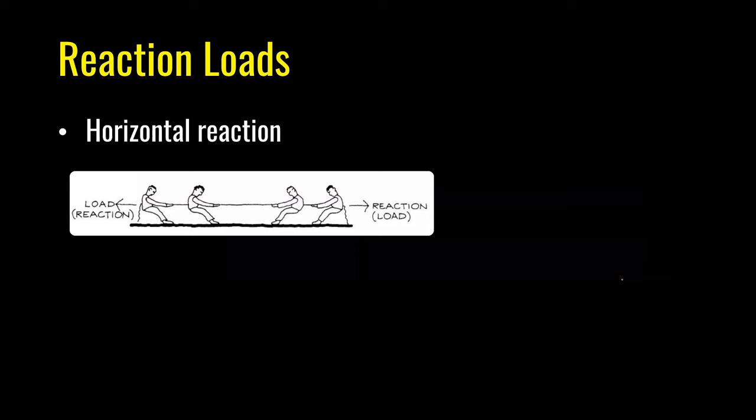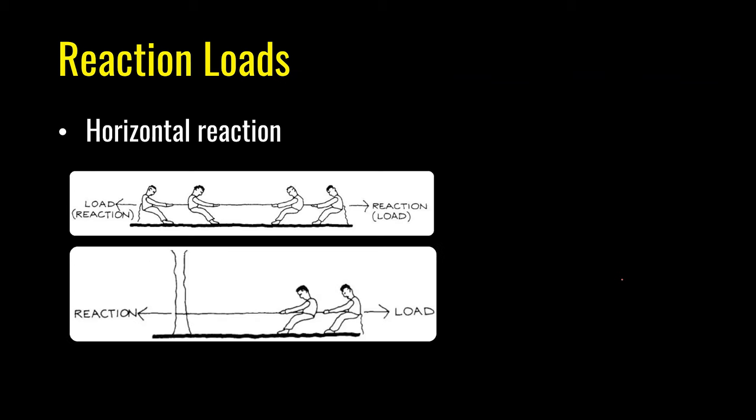Reaction is always required for equilibrium. A classic example of horizontal reaction is a tug of war — it is unclear which is the load and which is the reaction. Applied loads and reactions should be thought of as a balanced system; the pull of the team is the applied load and the tree provides the reaction. We can also have moment reactions — a moment is a force multiplied by a distance.